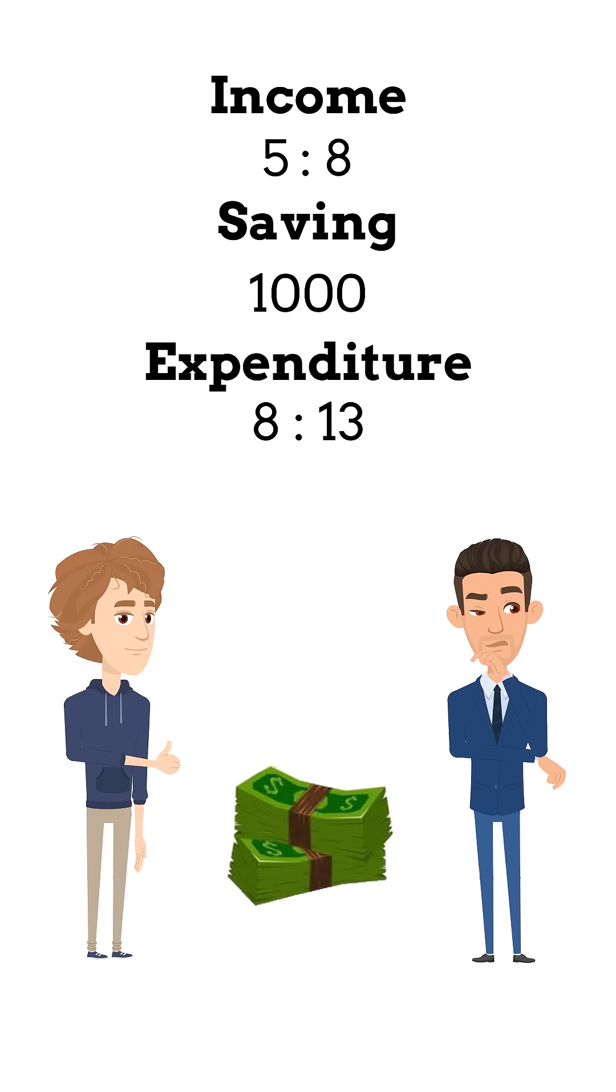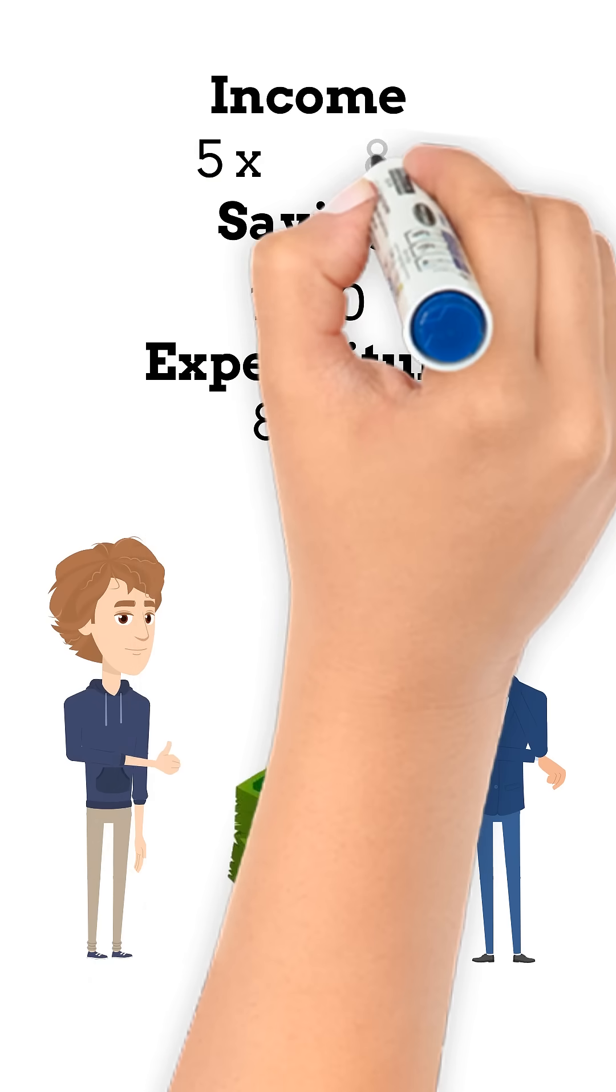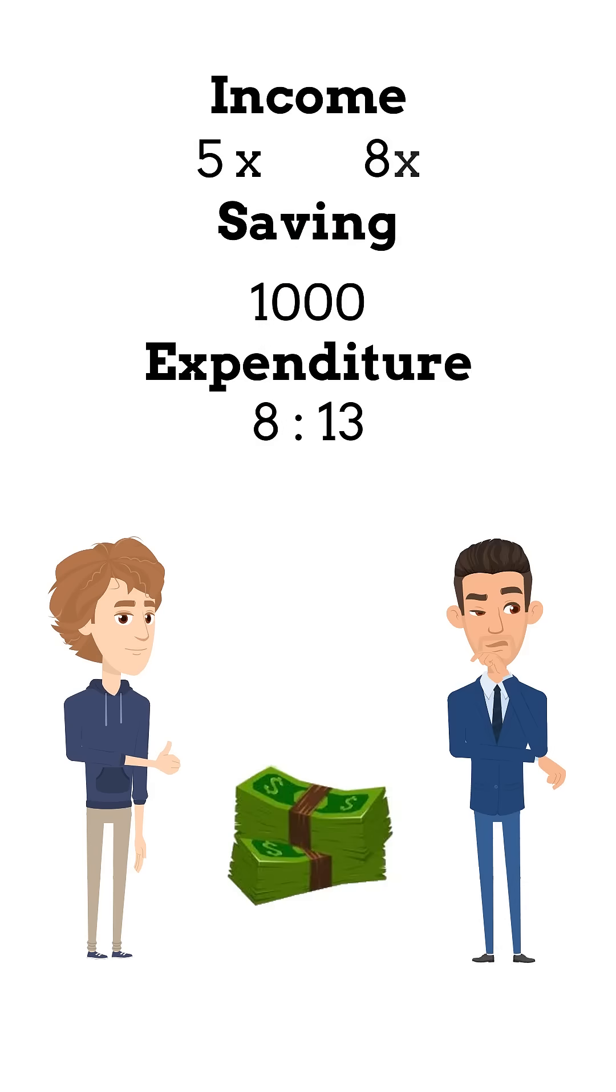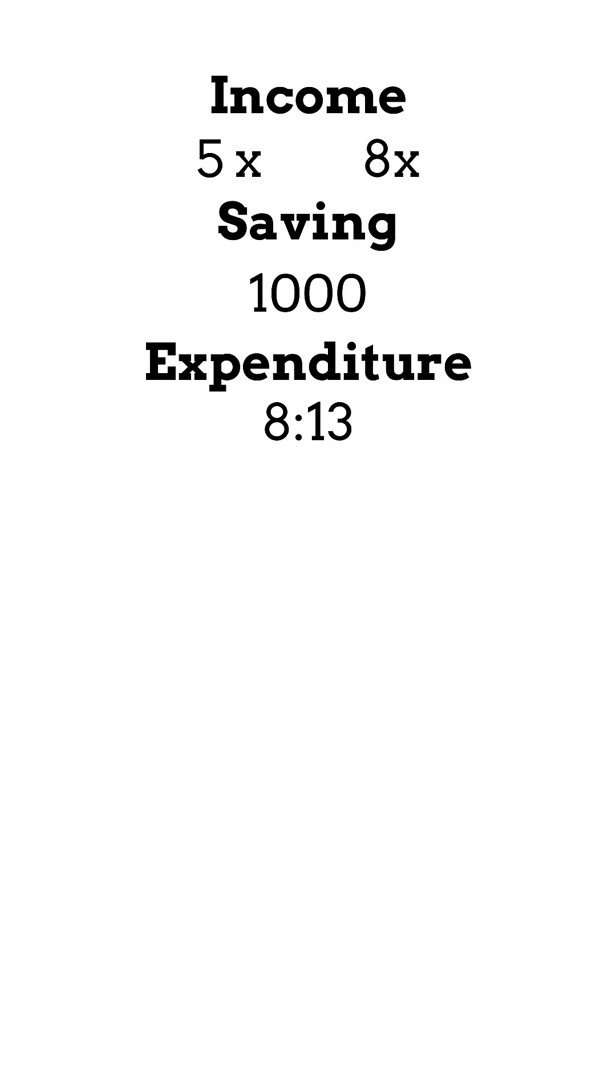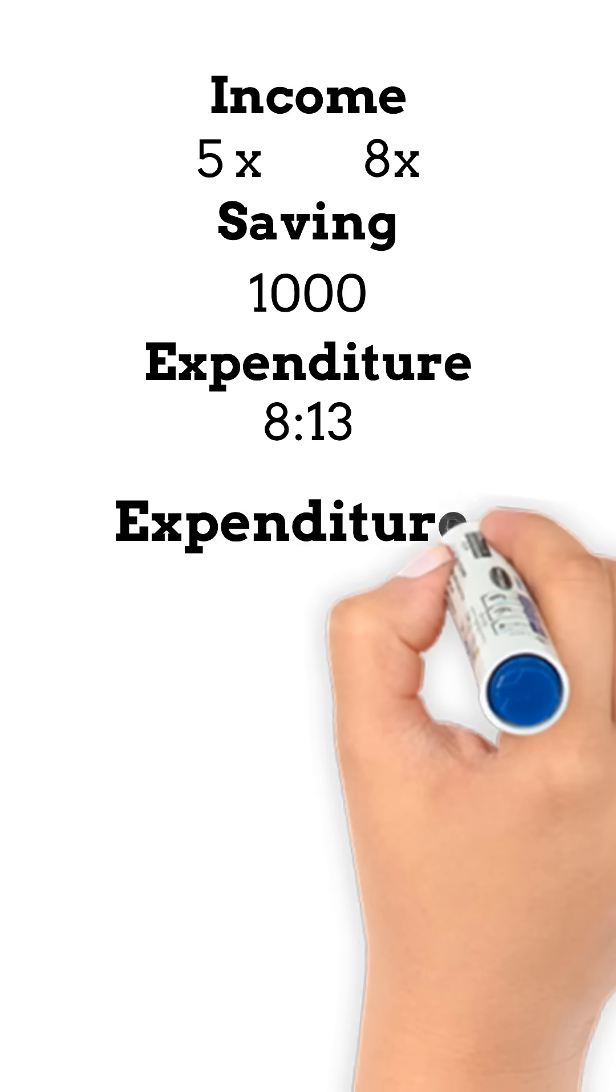Let us solve. We can rewrite the income as 5x and 8x. The formula for expenditure is income minus savings.